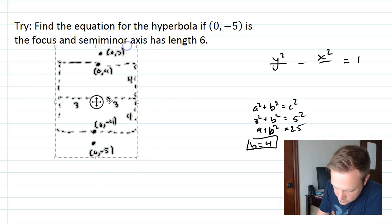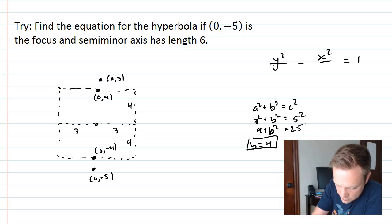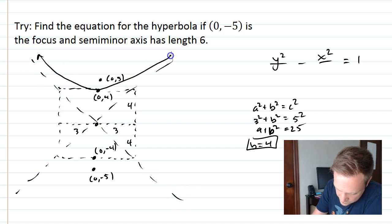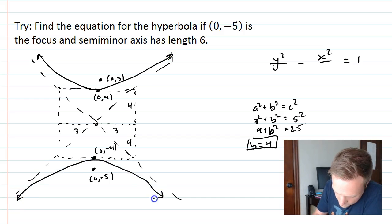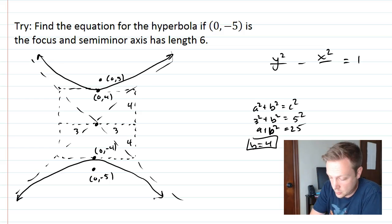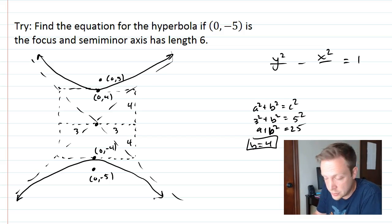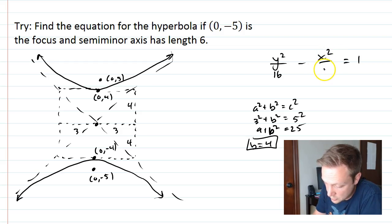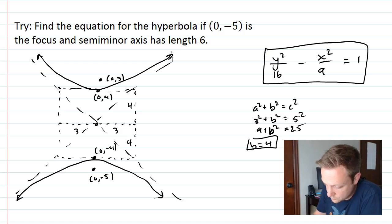Drawing dotted lines and sketching the picture, we have everything we need. We have y, b, and a for x. Since y is 4, we square it to get 16. Under x we have a squared, which is 3 squared equals 9. So the equation is y squared over 16 minus x squared over 9 equals 1. That is our equation.